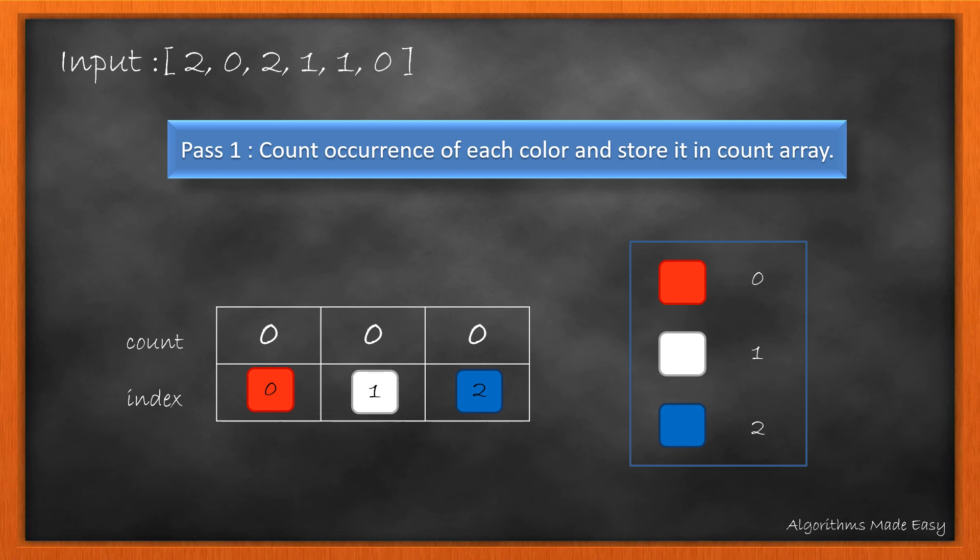Let's start with the first element. We increment the value at index same as that of the value of element. So we increment the value at index 2. In the next iteration we increment the value at 0. Similarly we will iterate over the input array till the end. This is our final count array.